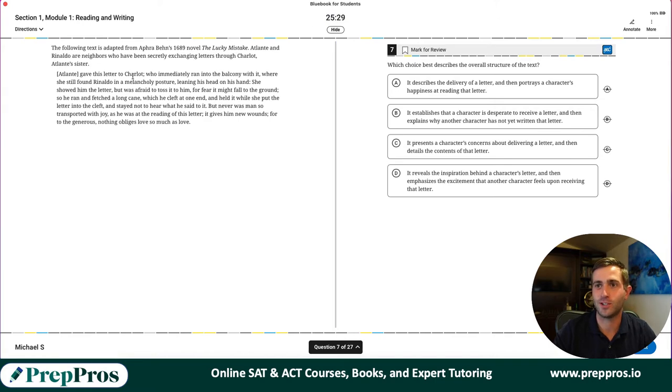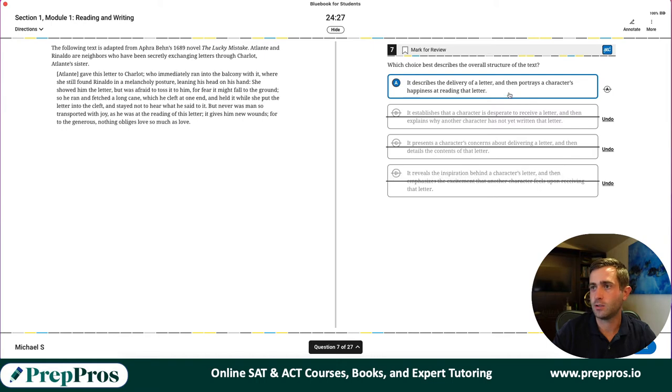Overall structure of the text here. I may have to pick up the pace. She gave this letter to Charlotte, who ran to the balcony with it, where she still found Rinaldo in a melancholy posture, leading his head on his hand. Showed him the letter, but it was afraid to toss it to him for fear it might fall to the ground. So he ran and fetched a long cane, which he cleft at one end. So describes the delivery of a letter and then portrays a character's happiness in it. Never was so transported with joy. This whole part is really just talking about the delivery, about the fear of maybe dropping it on the ground. So A should be our correct answer.